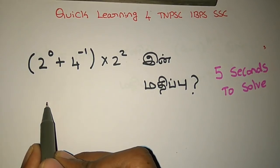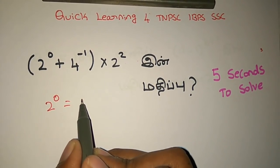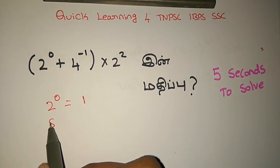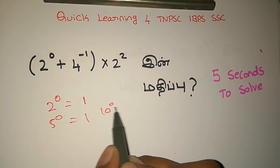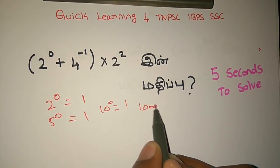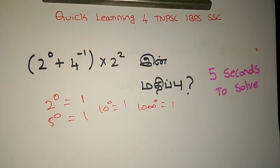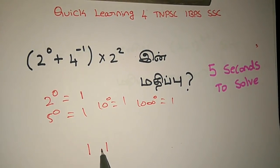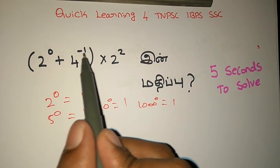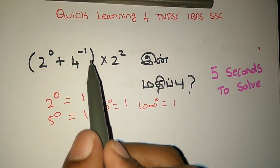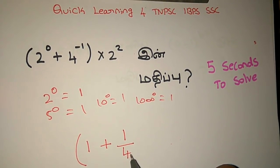If we have a number and see the answer, we will return 1. 5.0 is 1, 10.0 is 1, 2.0 is 1, 1 equals 1. The minus will be minus 1, and minus 1 equals 4.